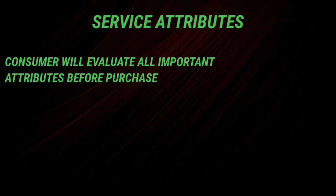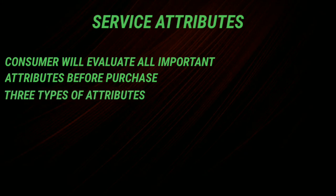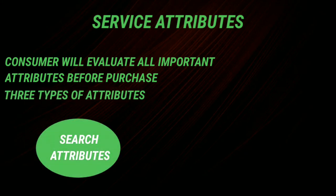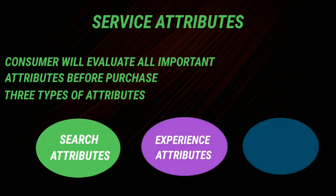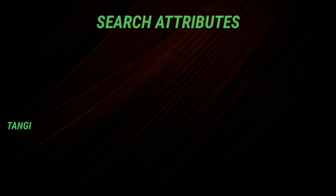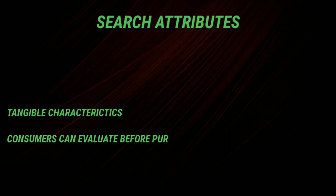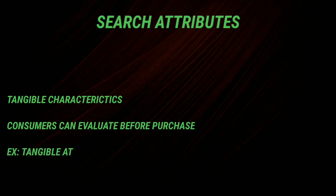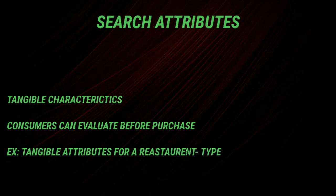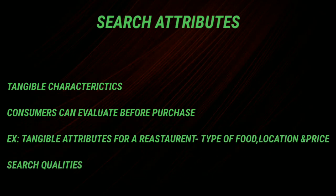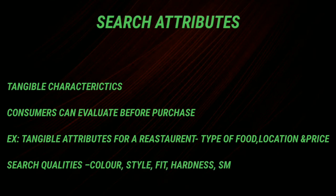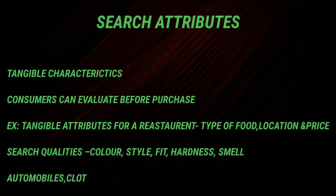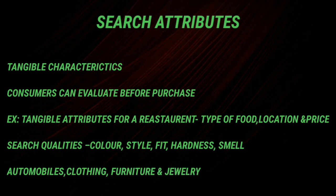There are three types of attributes: search attributes, experience attributes, and credence attributes. Search attributes are tangible characteristics — meaning we can see, touch, and smell them — that consumers can evaluate before purchase. For example, search attributes for a restaurant include type of food, location, and price. These things we can check before purchase.